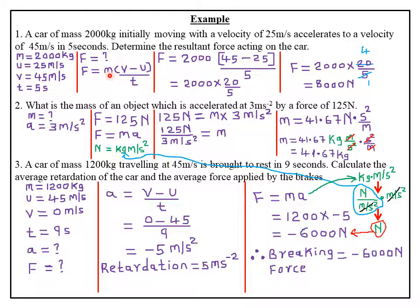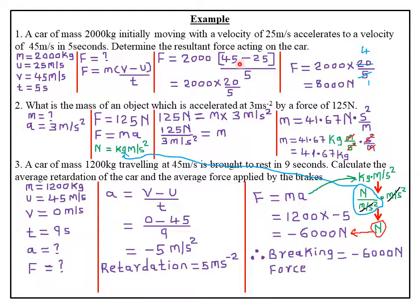Where m is the mass of the body, v the final velocity, u the initial velocity, and t the time taken for that change in momentum to take place. After that, we just substitute the values. We want to find F. Mass m is 2,000 kilograms, final velocity v is 45 meters per second, initial velocity u is 25 meters per second, divided by time t which is 5 seconds. Before you substitute, always ensure that each and every quantity is in their respective SI units.